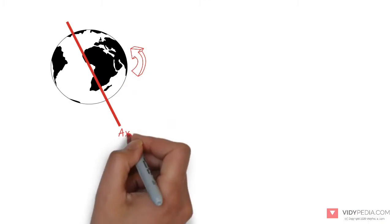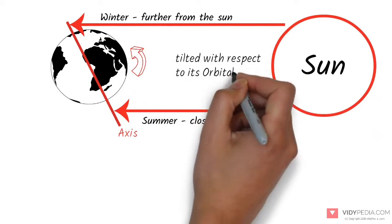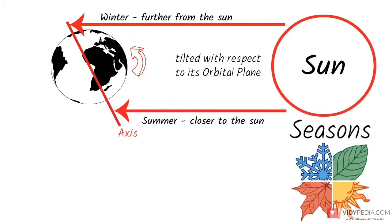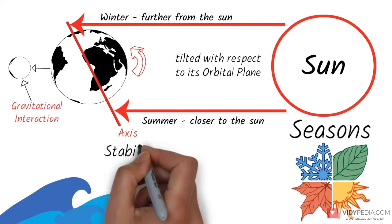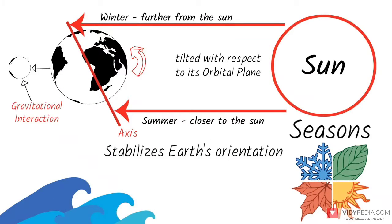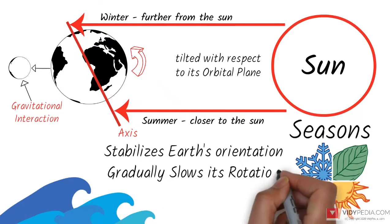Earth's axis of rotation is tilted with respect to its orbital plane, producing seasons on Earth. The gravitational interaction between Earth and Moon causes tides, stabilizes Earth's orientation on its axis, and gradually slows its rotation.